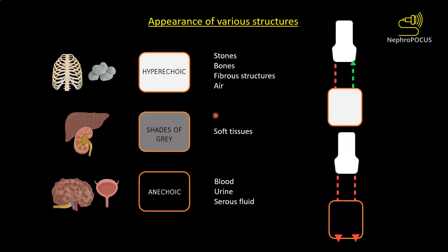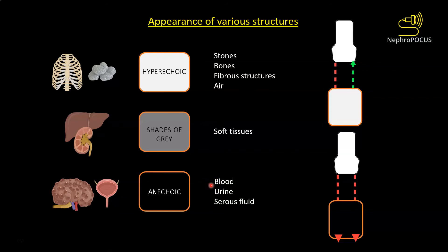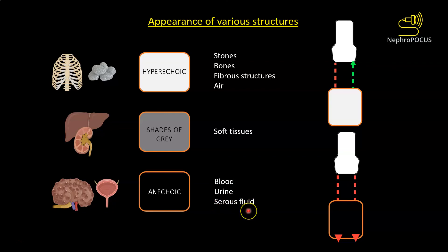Soft tissues appear in different shades of gray — they can be hyperechoic or hypoechoic compared to surrounding structures depending on their internal composition. Anechoic structures completely transmit ultrasound waves and do not reflect any, so they appear black on the ultrasound screen. Blood is anechoic, which is why blood vessels appear black. Urine is anechoic, so hydronephrosis and the urinary bladder appear black. Serous or any clear fluid is also black, which is why kidney cysts appear as black structures.